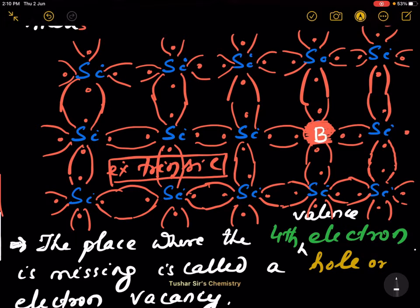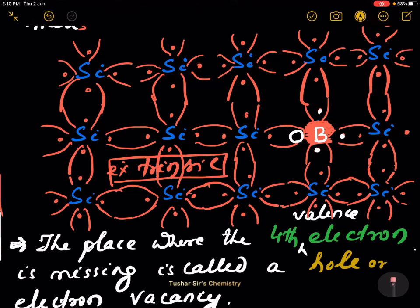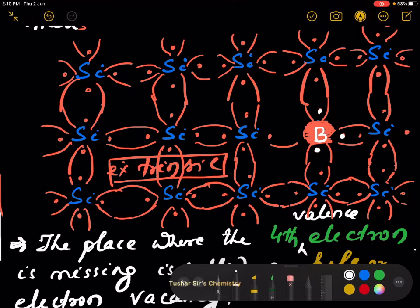You know boron has three valence electrons. One, two, three. Then this part is missing. Or you can say there is no electron. Let it be a hole.